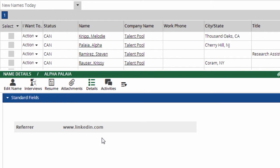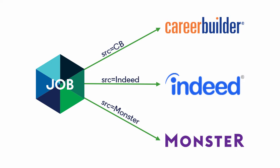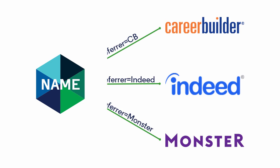How does that data get there? Any time a job link is generated from one of the system's external posting utilities or job feeds — scenarios in which PCR knows what site or service that Apply link is going to be published on — the job link has a source tag embedded in it. When someone clicks the link and creates a name record, the system records that source tag into the Referrer Detail field.